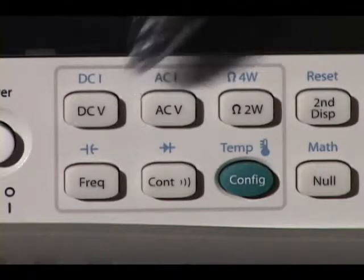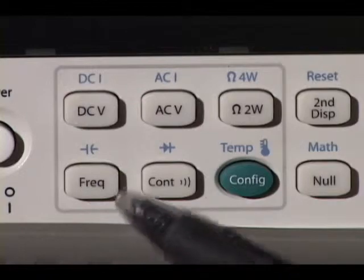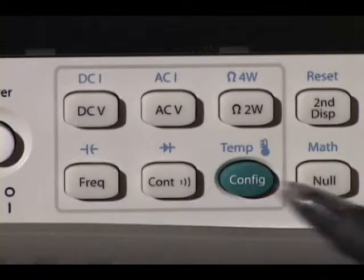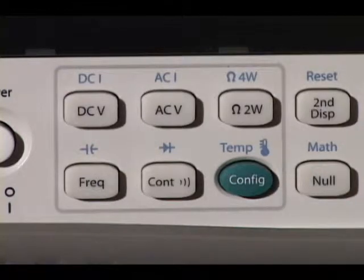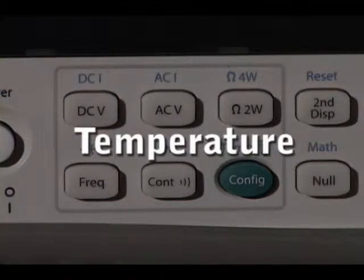In addition to AC and DC voltage and current, you can easily measure two and four wire ohms, frequency, period, continuity, and diode test. New with the 34410A is the ability to measure capacitance and temperature as well.